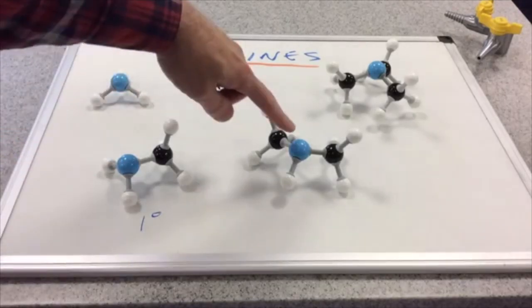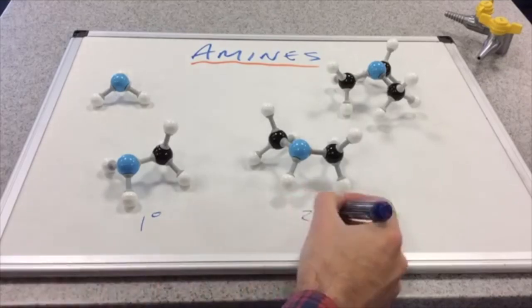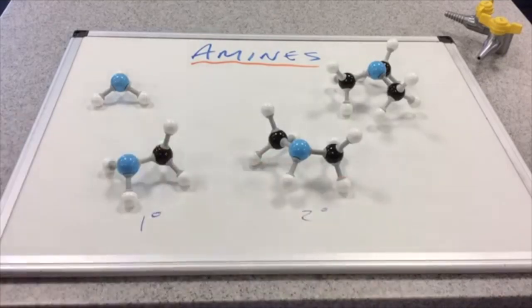This amine here, you can see the nitrogen is bonded to two carbons directly and so therefore this is a secondary amine. As a result we've only got one hydrogen on the nitrogen. This is called dimethyl amine.